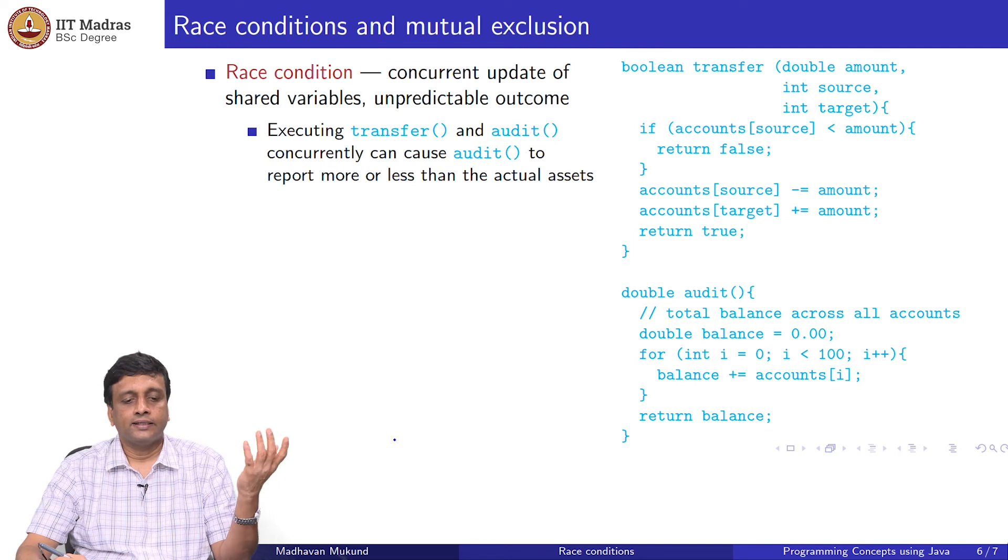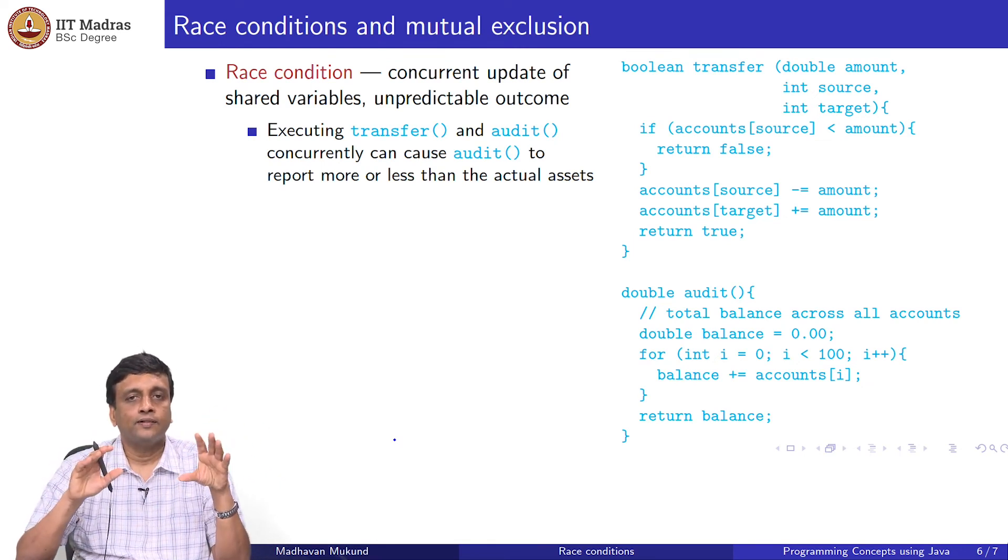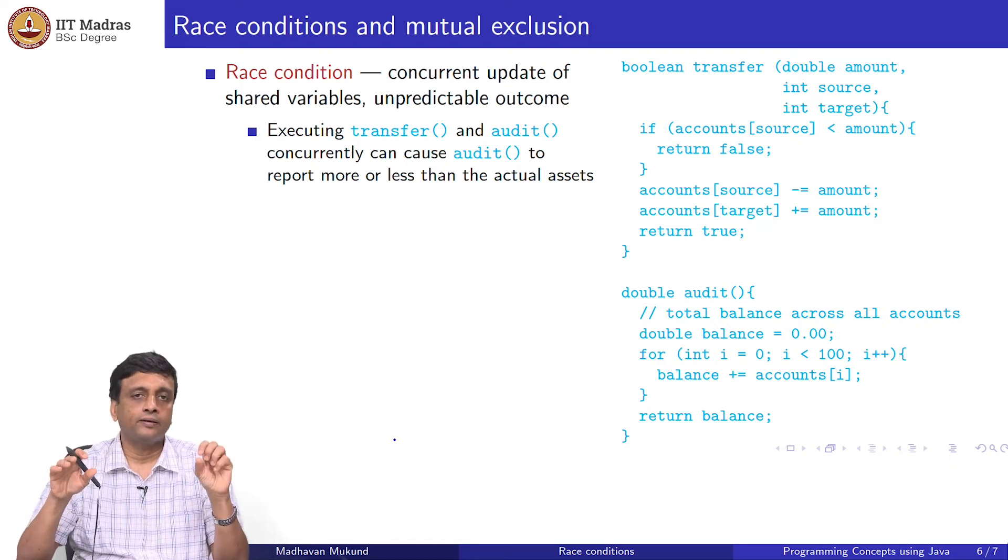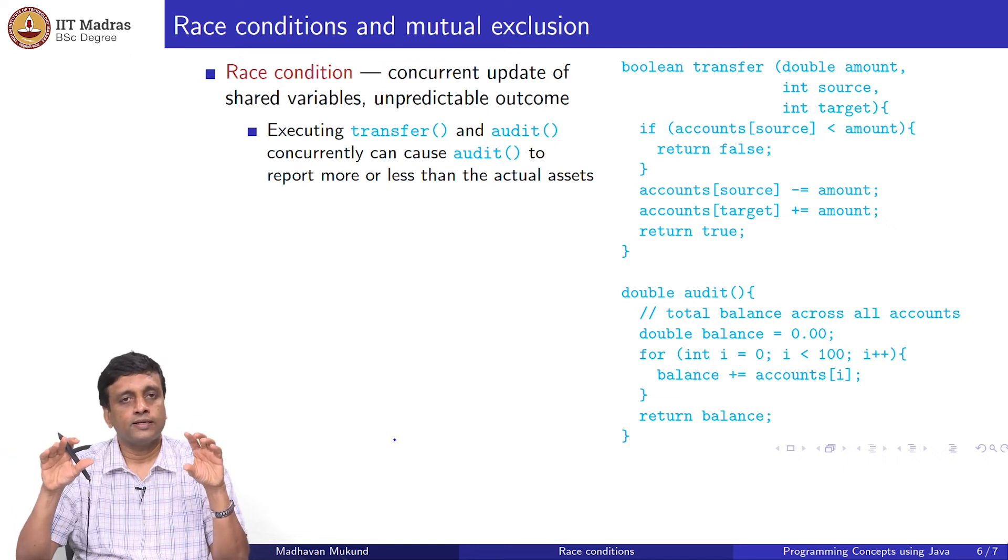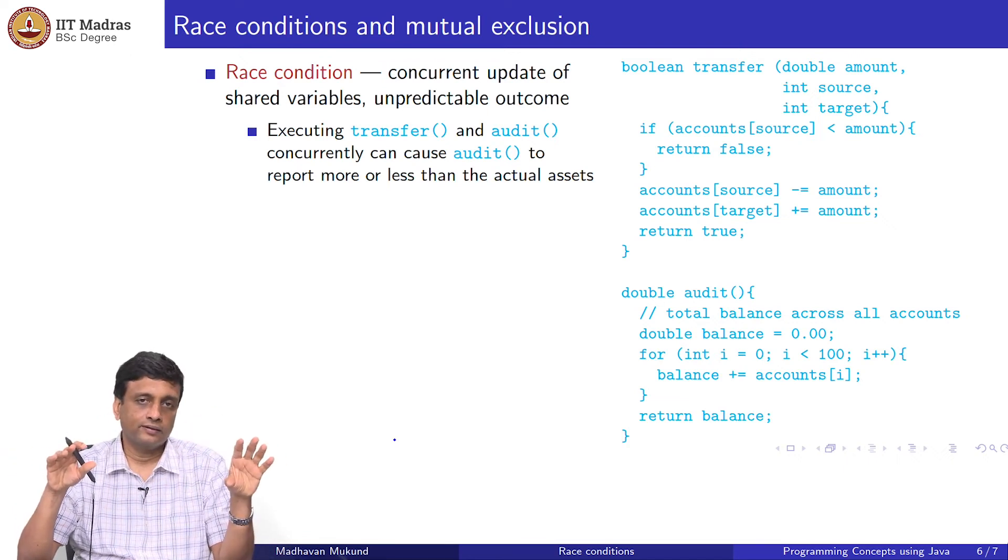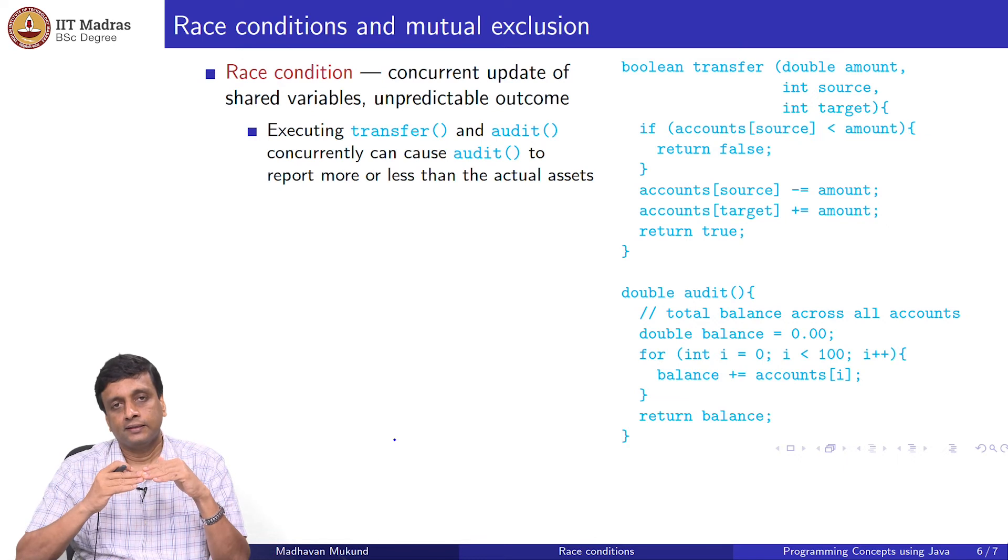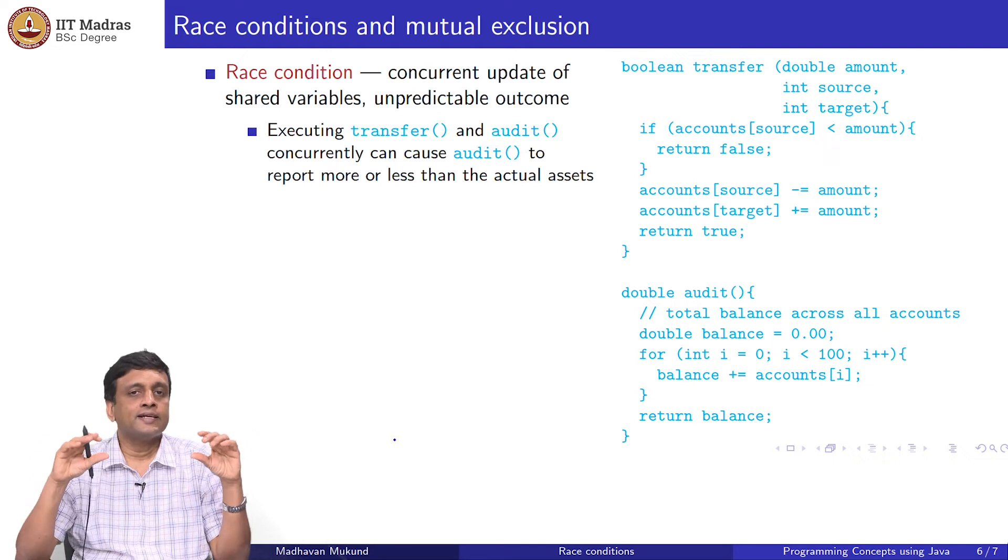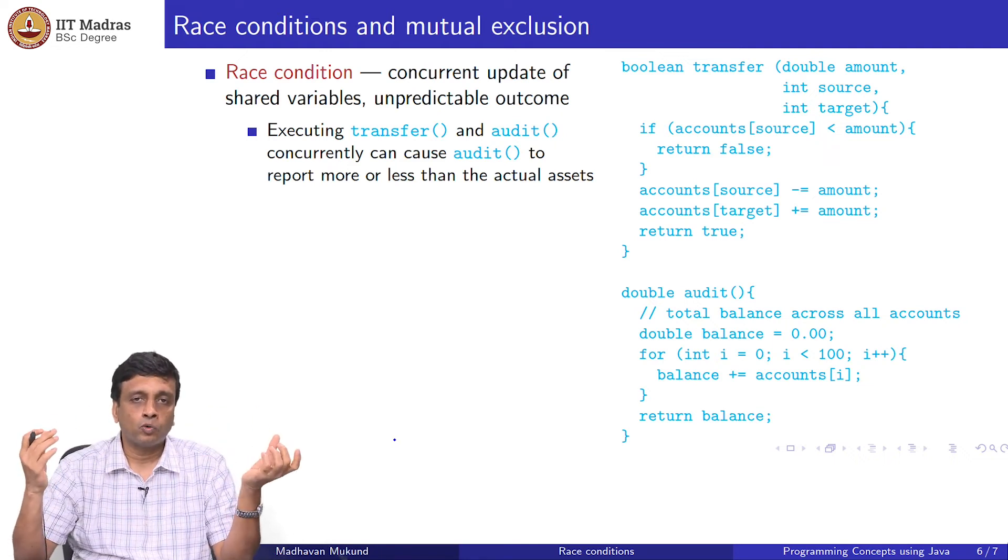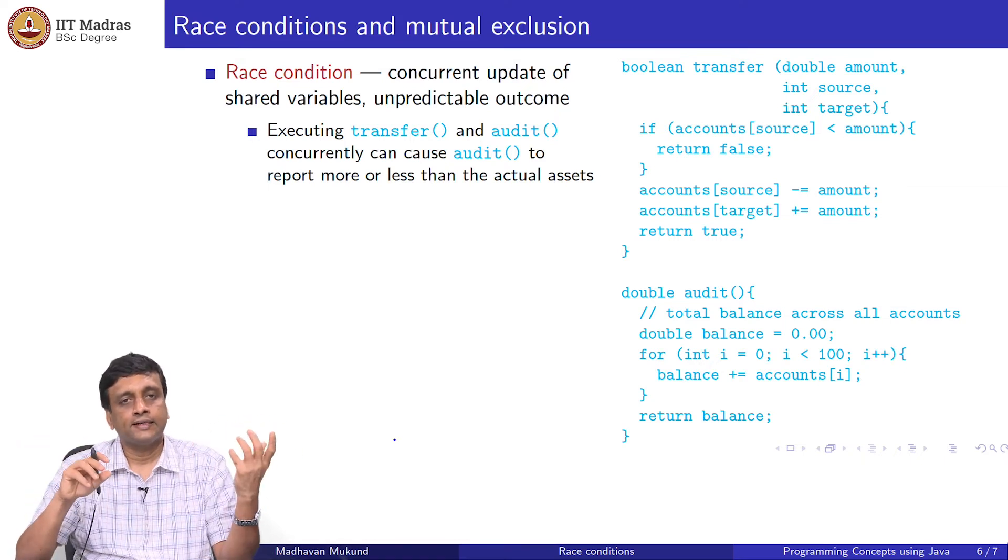This is technically what we call a race condition. A race condition is when we have concurrent updates. In the previous example, two things were updating. In the bank account case, the update was not concurrent—the transfer was happening sequentially, first subtract then add. But it was happening in parallel with something that was observing it in concurrence. In all such situations where I have this kind of concurrent update, and as a result there is some ambiguity about what the final answer is going to be, there is an unpredictable outcome. I call these race conditions.